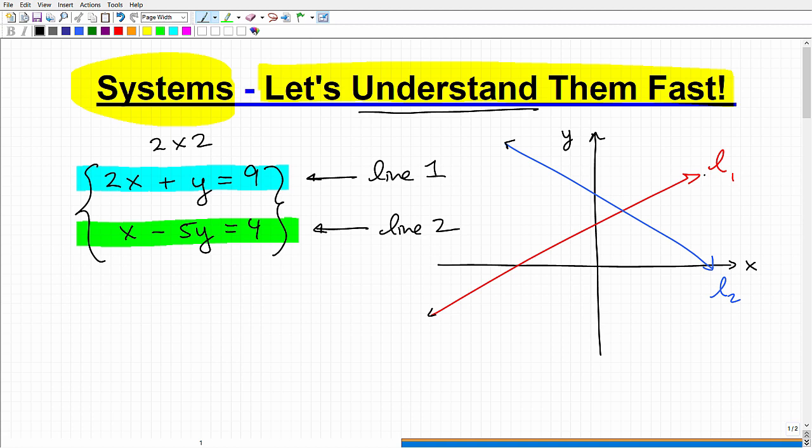Well, you're trying to solve a system of equations. And the solution to a system is the point where two lines intersect. So these two lines here intersect at this point. Let's just kind of make up a coordinate. Let's say this is the point three, five, for example.